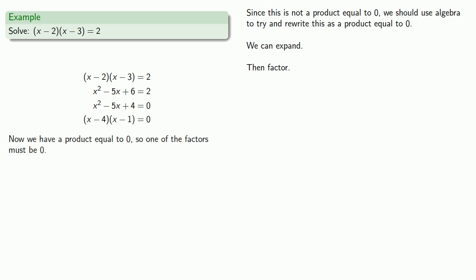And now we have a product equal to zero, so one of the factors must be zero. Either x minus 4 is zero or x minus 1 is zero. So we'll solve and get our two solutions.